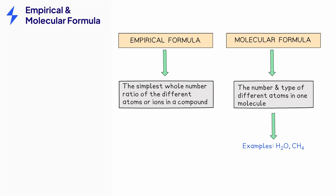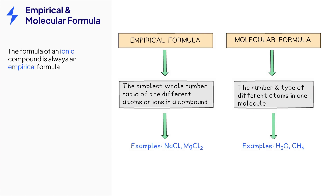The formula of ionic compounds shows the simplest ratio of ions in a compound, such as in sodium chloride, where there is one sodium ion for every one chloride ion, or magnesium chloride, which contains one magnesium ion for every two chloride ions. The formula of an ionic compound is therefore always an empirical formula. Some molecules have different empirical and molecular formulae.